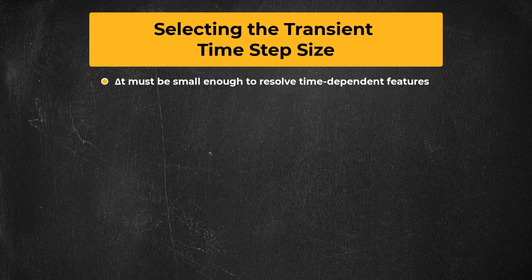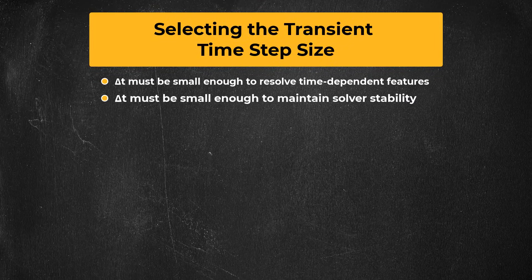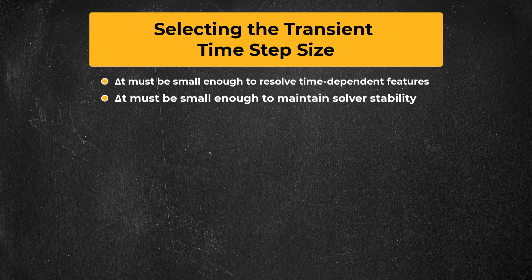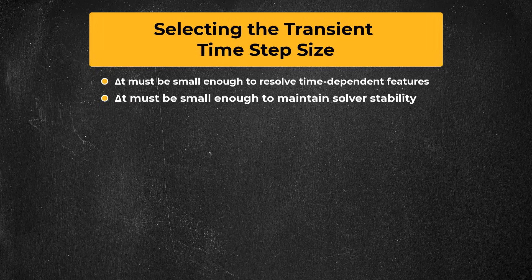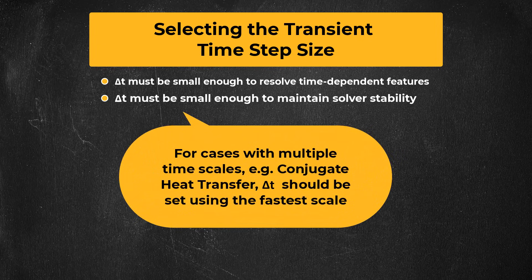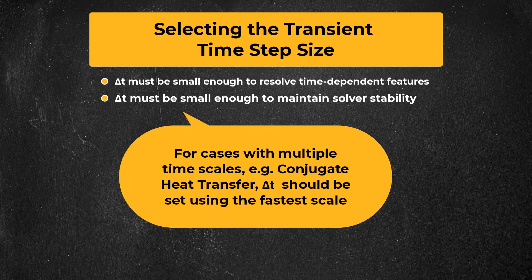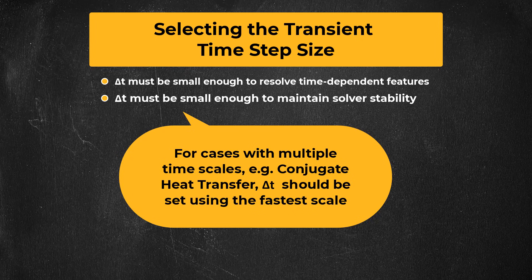The second criterion is that the time step size has to be small enough for the solution to remain stable and reach convergence each time step. For instance, if you're trying to predict the temperature change in a solid, that might happen very slowly, so you'd want to use an appropriately large time step, but if the velocity or other quantities in the flow have smaller time scales, you will generally have to use a smaller time step or else risk having the solution diverge.